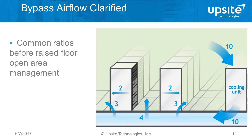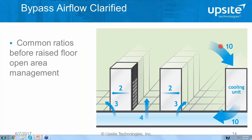We'll get into some of the science here a little more closely. Bypass airflow is a widely talked about concept but it's often misunderstood. There's bypass airflow at the cabinet level, but there's also bypass airflow at the room level, and at the room level is what's most important to consider.